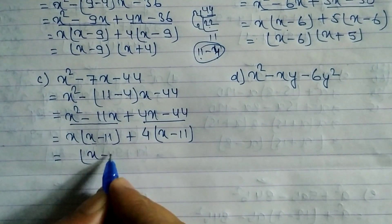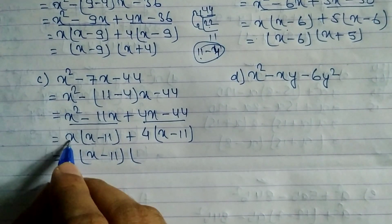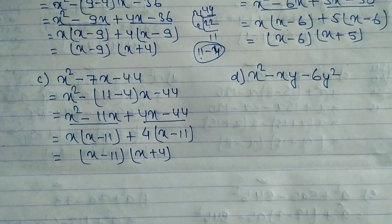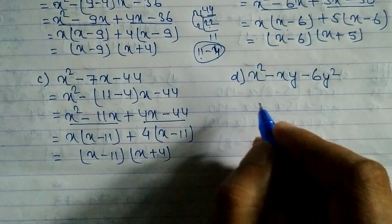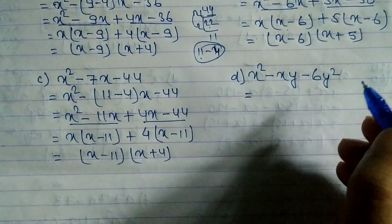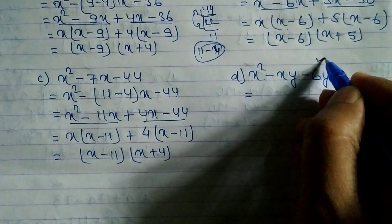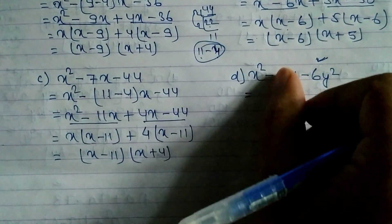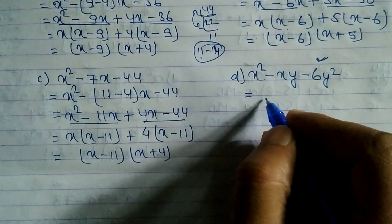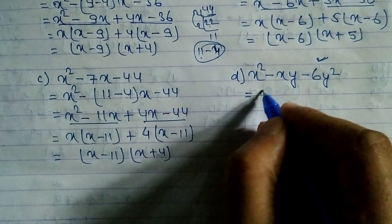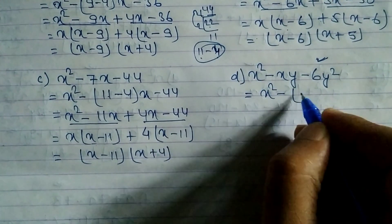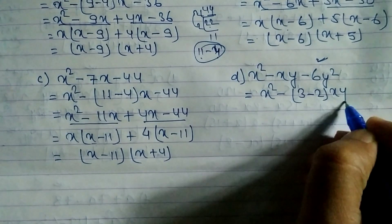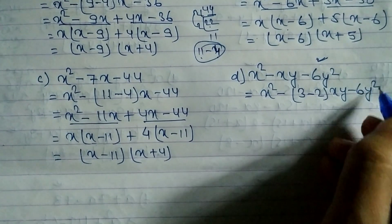Taking (x - 11) as common, the remaining is (x + 4), so the answer is (x - 11)(x + 4). Now look at problem d. We need factors of 6 with difference 1: 3 times 2 is 6 and 3 minus 2 is 1. We write x² - (3 - 2)xy - 6y².